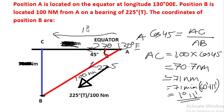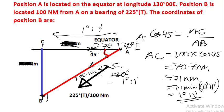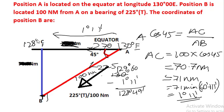Going westwards, the longitude will reduce, so we subtract 1 degree 11 minutes from 130 degrees to get the longitude of C or B. So 130 degrees minus 1 degree 11 minutes — we can write this as 129 degrees 60 minutes minus 1 degree 11 minutes — which gives us 128 degrees 49 minutes. The longitude of B is 128 degrees 49 minutes east.